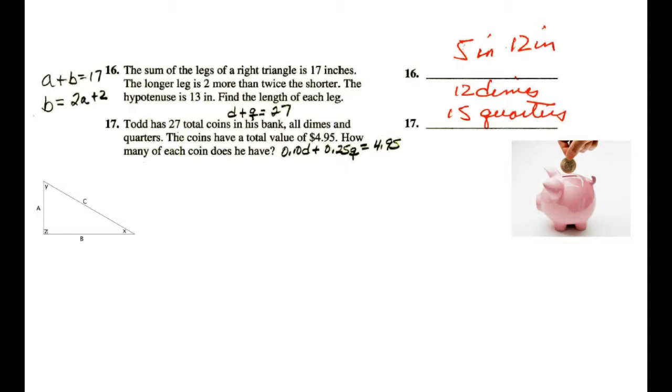Now, Todd, for this next one, has 27 coins in his piggy bank. Making that up. They're all dimes and quarters. So our first equation, then, would be dimes plus the number of quarters equals a total of 27. Now, again, you could use x and y, but d and q work out very well. Now, the coins have a value of $4.95. How many of each coin does he have?